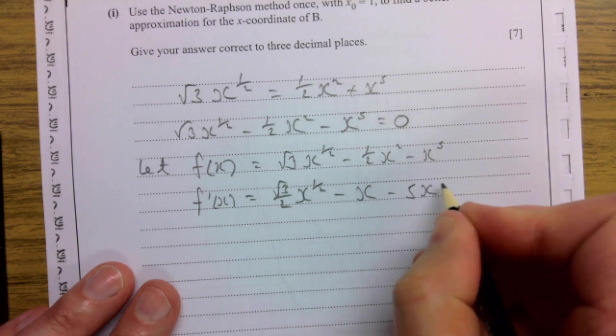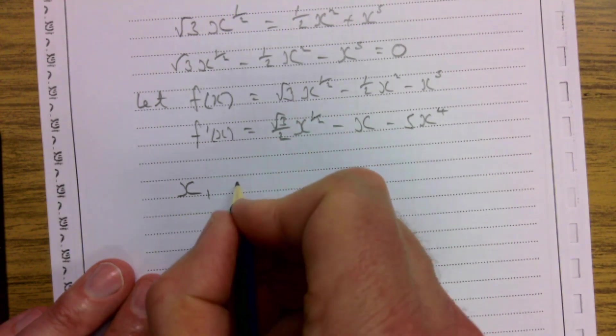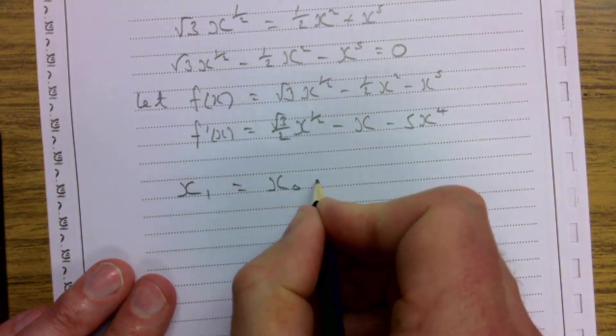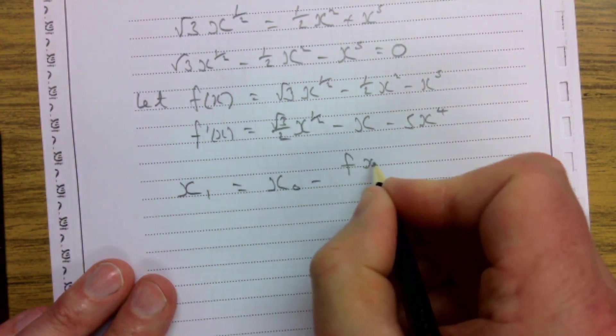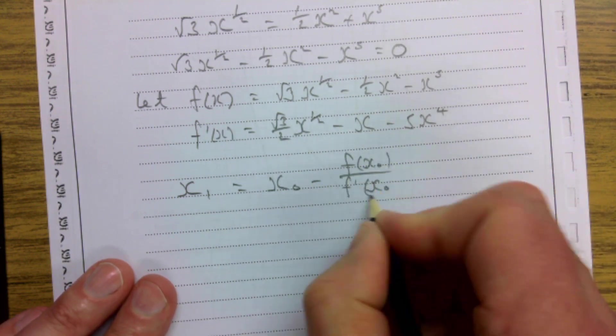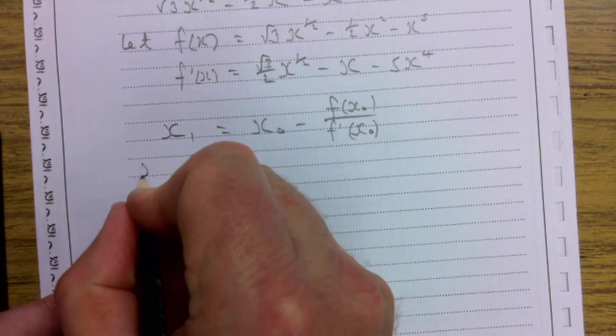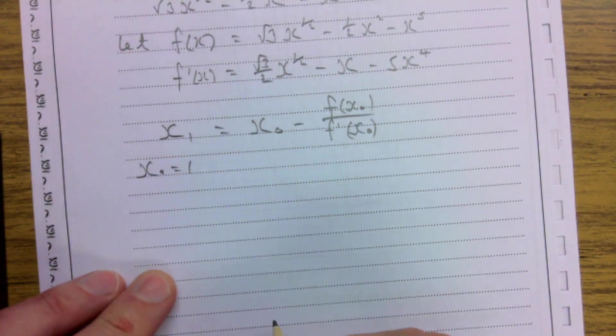And then my Newton-Raphson formula, x₁ equals x₀ minus f(x₀) over f'(x₀). So that's substituting the values. And we're told we're taking x₀ equal to 1.